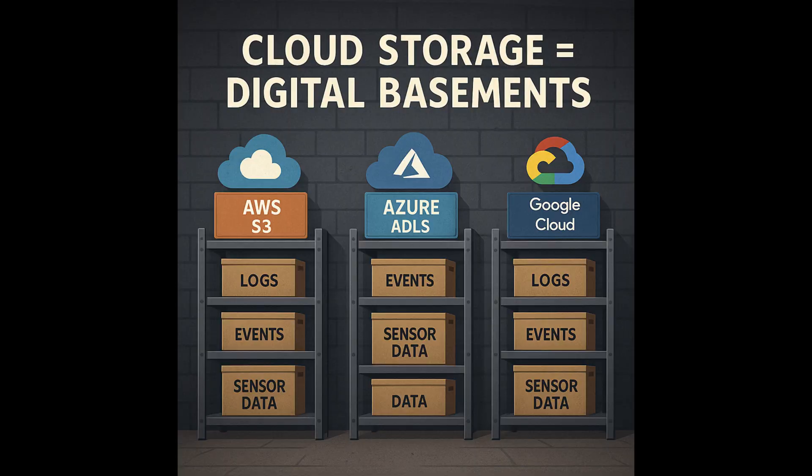Before data is transformed and queried, it needs a place to land, and that's where cloud-native storage really comes into play. We have things like Azure Data Lake, commonly referred to as ADLS, AWS S3 containers, and Google Cloud Storage. Think of them like your digital basement — you toss in all your raw data, raw logs, events, clickstreams, and you're just piling it all in. It's not pretty, it's not organized, but it can be really valuable once it's shined up a little.